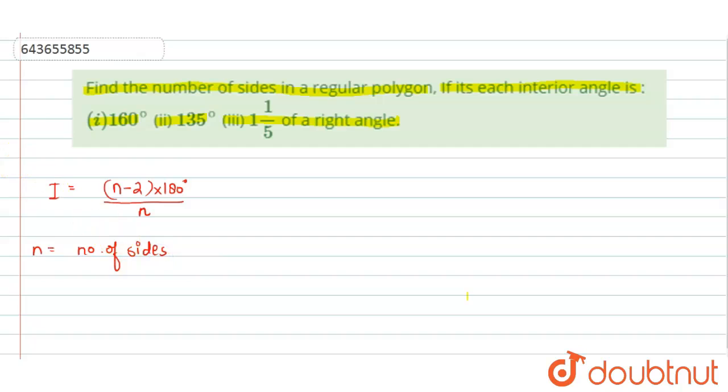Now using this formula, let us solve these parts one by one. So for the first part, interior angle is given as 160 degree. So we can just use this formula (n minus 2) into 180 degree divided by n equals to 160 degree. Now we can cancel this 0 by this 0 and also we can cancel this by 2, 9 times and again this by 2, 8 times.